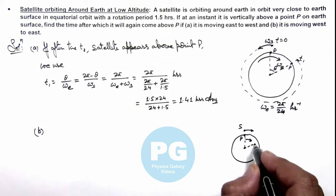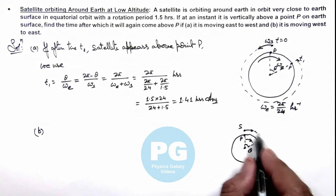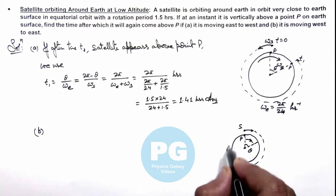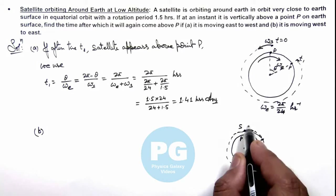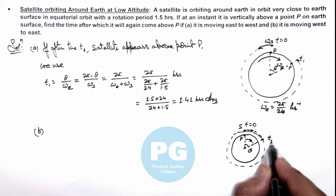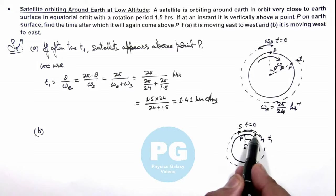As satellite period is 1.5 hours it is moving fast, so the time in which Earth rotates by an angle θ, if satellite revolves around Earth by an angle 2π+θ, if this is t=0 and this is time t₁, so we can say if after time it rotates by an angle 2π+θ.